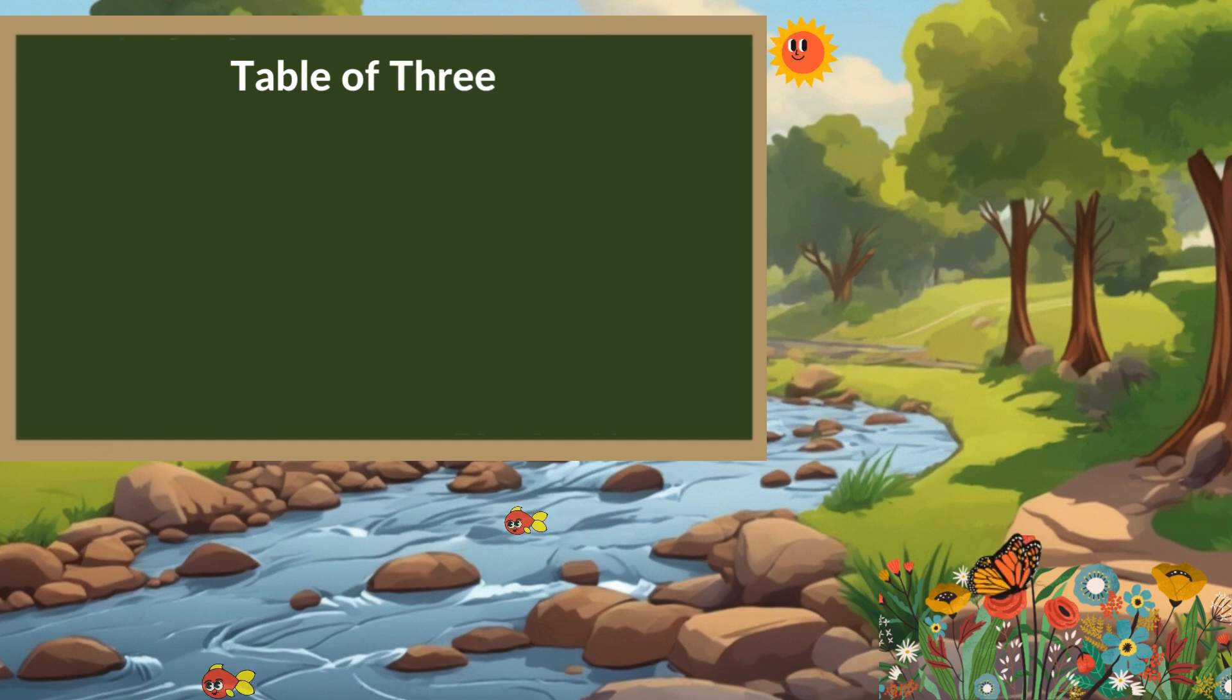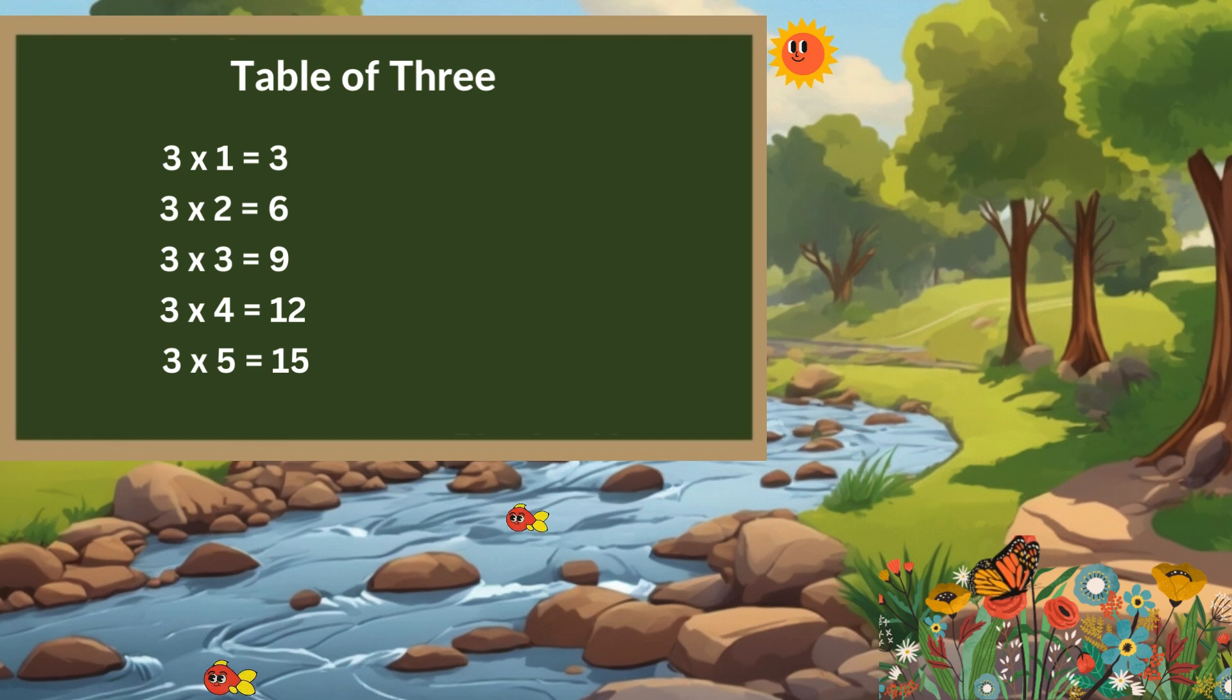Next, table of 3. 3 times 1 is 3, 3 times 2 is 6, 3 times 3 is 9, 3 times 4 is 12, 3 times 5 is 15.